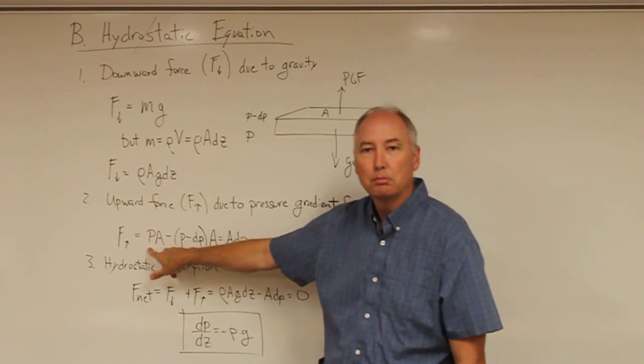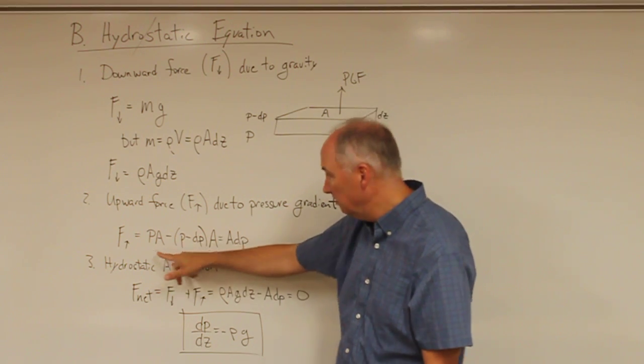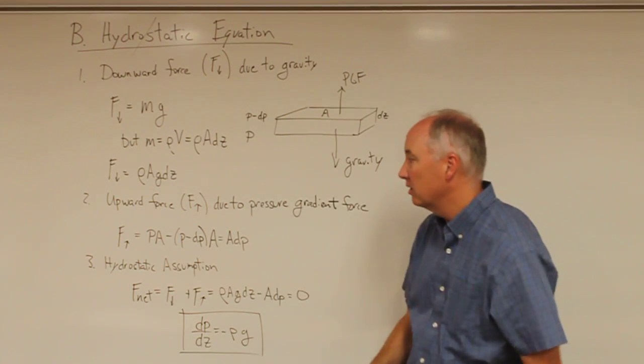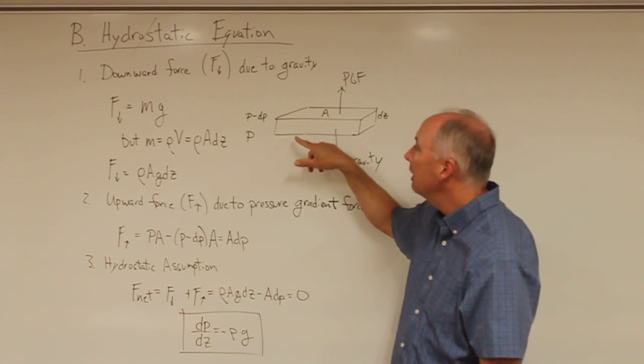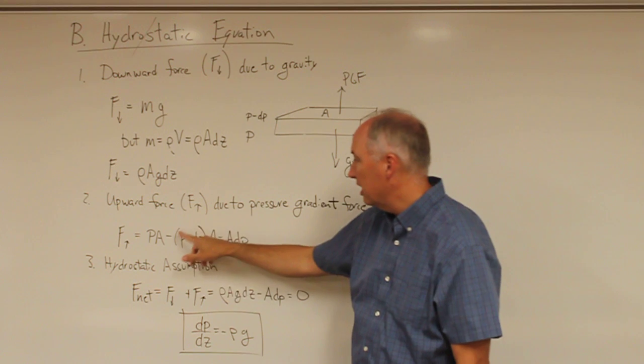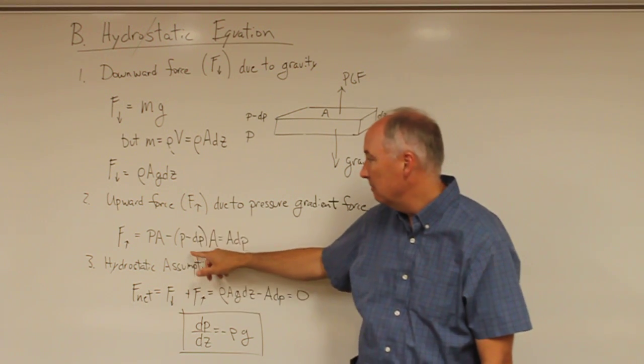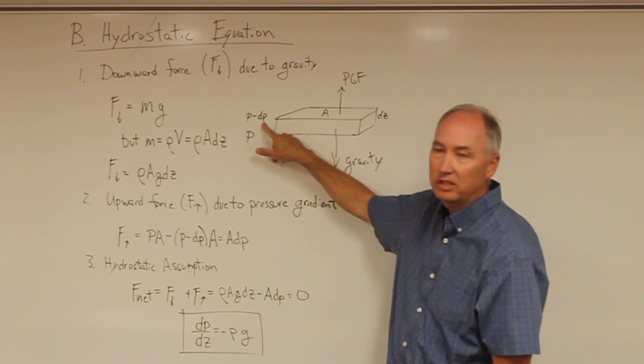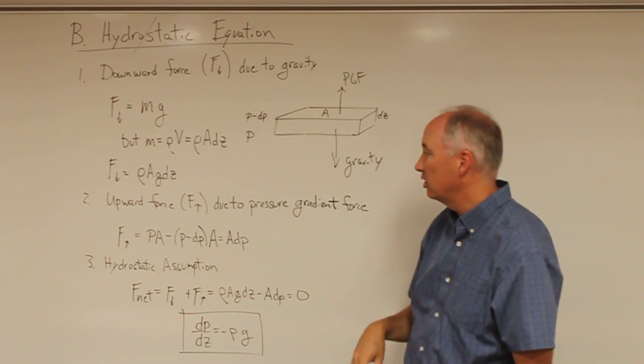If we want to get the pressure gradient force, then we need to multiply that pressure by the area over which it's acting. So for this particular air parcel, the upward directed force at the bottom of the air parcel is the pressure times the cross-sectional area. And the pressure gradient force at the top of that layer is the pressure minus a small increment in pressure, dP, times the cross-sectional area.